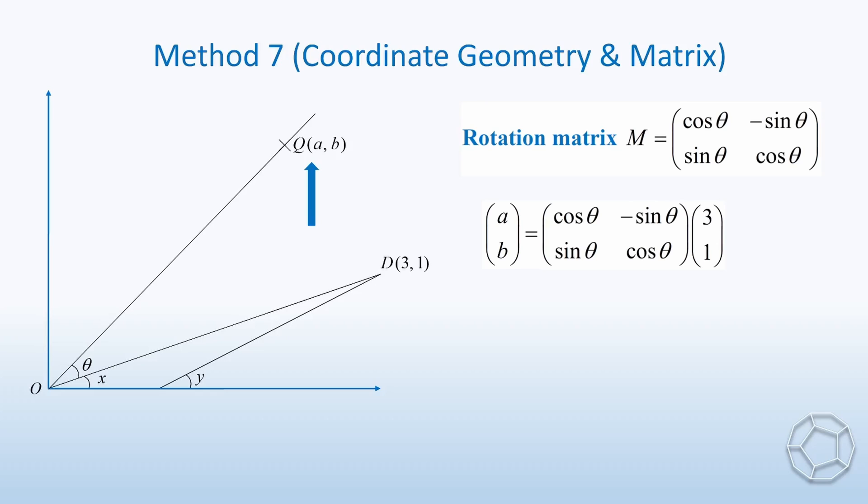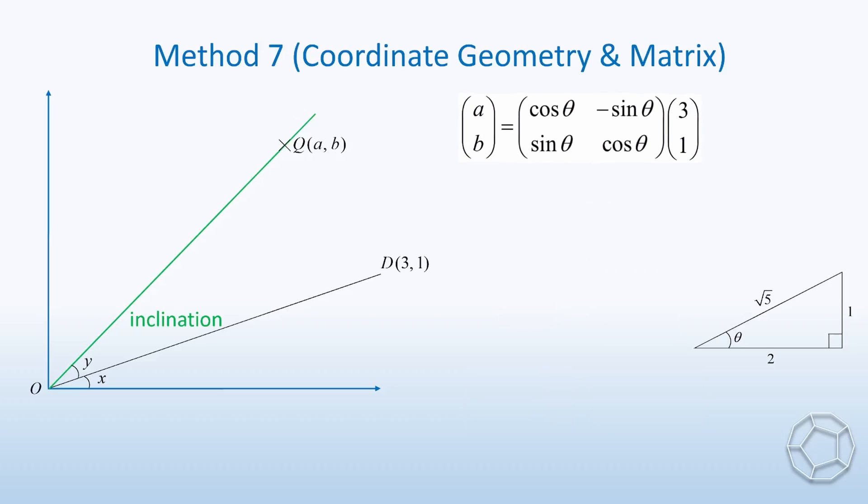So what value of theta should we choose? Clearly, if theta is equal to y, then the inclination of the green line OQ is exactly x plus y. Therefore, tangent theta is equal to 1 over 2. By drawing triangle, we have the two values, sine theta is equal to 1 over square root 5, and cosine theta is equal to 2 over square root 5. Now, we can put everything into the equation like this. Here, we take out the common factor 1 over square root 5 for convenience. After performing matrix multiplication, we get the coordinates of Q. That is, AB is equal to square root 5, square root 5.